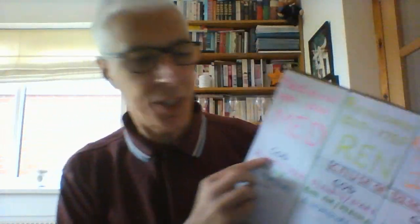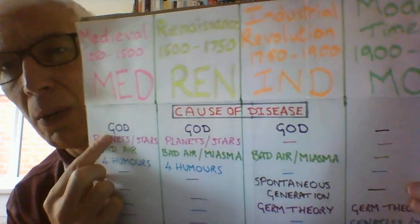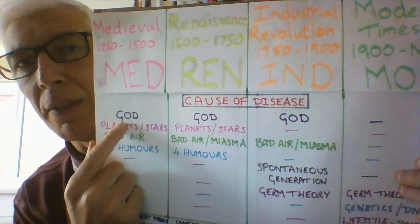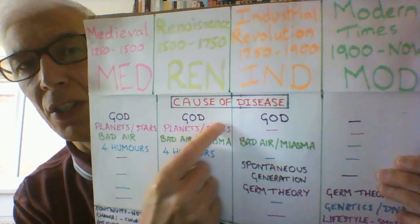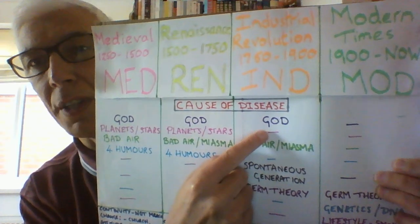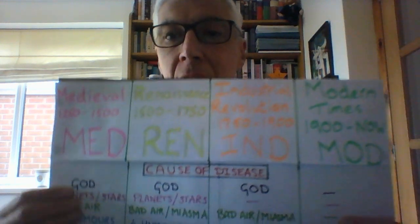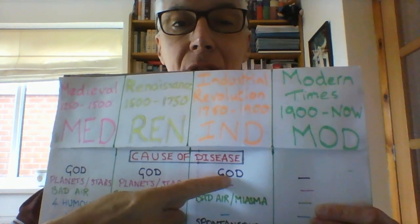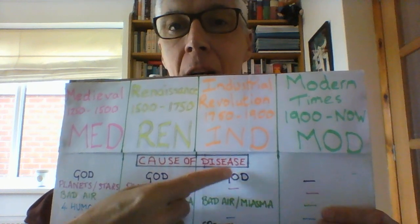You will see the idea that God somehow was causing disease was strong in Medieval times, still there a bit in the Renaissance, and for the first part of the Industrial Revolution. Why? It links to their way of life — they were not as scientific, so it made perfect sense and was logical for them to believe that God was all-powerful and in charge of disease. But then it changes.